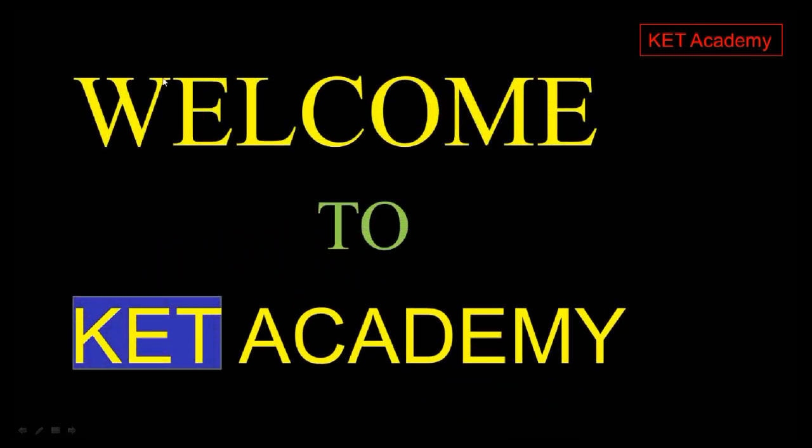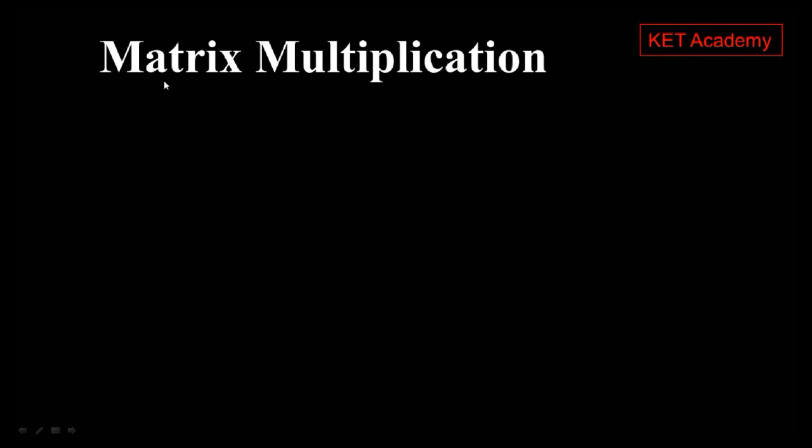Hello everyone and welcome to KEL Academy. In today's video we're going to be looking at matrix multiplication. A matrix is simply a way in which data or quantities are represented in rows and columns. There are basically two types of matrix multiplication: multiplication by a scalar, or multiplication of a matrix by another matrix.